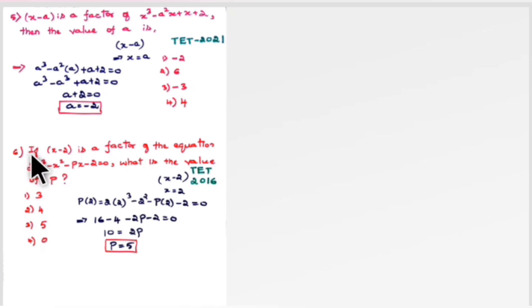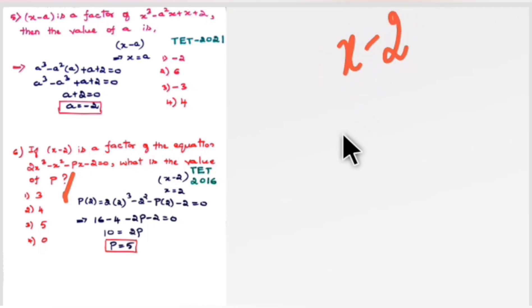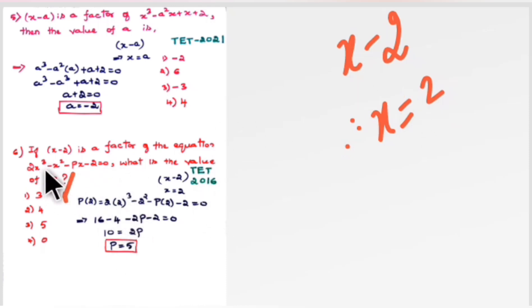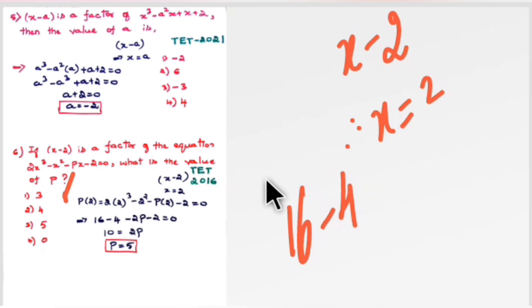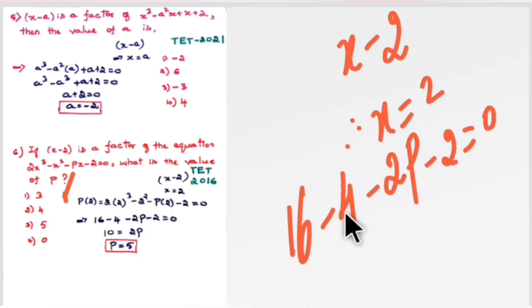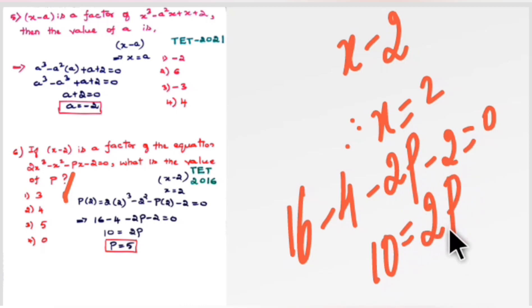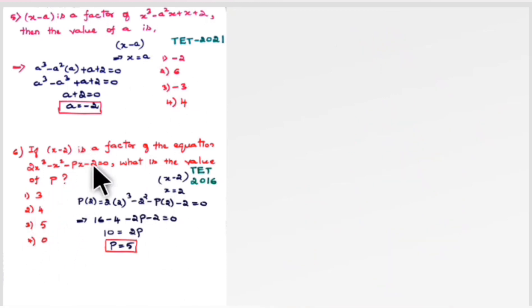Another question: if (x − 2) is a factor of the given equation, find the value of p. Since the factor is (x − 2), directly take x = 2 and substitute. In the exam you can do this by mental calculation: 2³ = 8, then subtract 4 (from x² term), minus 2p, minus 2 = 0. So 8 − 4 − 2 = 2, and 10 − 2p = 0... wait — 10 = 2p, so p = 5. Option 3 is the right answer. This question was asked in TET 2016.